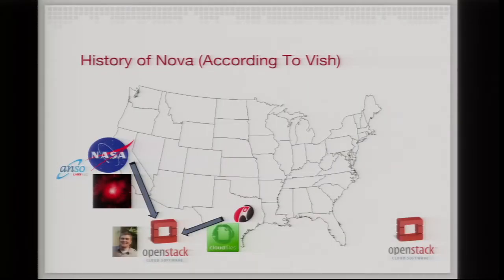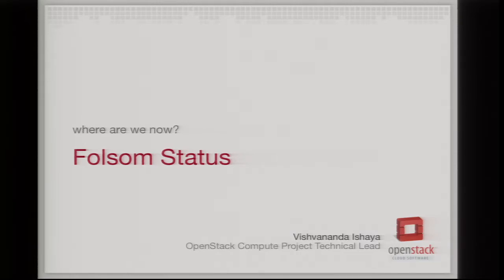We open-sourced the code and started using it within three weeks with alpha customers at NASA. Then Rackspace found out about it, and we collaborated — the Nova code from NASA plus the cloud files code that became Swift — to found OpenStack a couple of years ago. We had six people working on the code originally; now just in OpenStack Compute we've had over 75 individual contributors in the past six months and about 150 in the lifetime of the project.